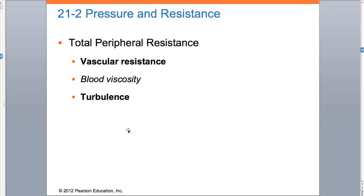This slide explains total peripheral resistance - these three things are going to slow down the blood. One is vascular resistance. The example I give is if there's more of you - if you've gained weight and there's more blood vessel, more blood vessel means more resistance, and so blood pressure is actually going to want to go down. And if that's the case, what is the body going to do? The heart is going to have to work harder, forced to generate a greater pressure to counter the vascular resistance. So vascular resistance is what slows down your blood.